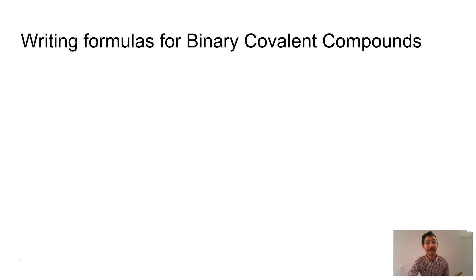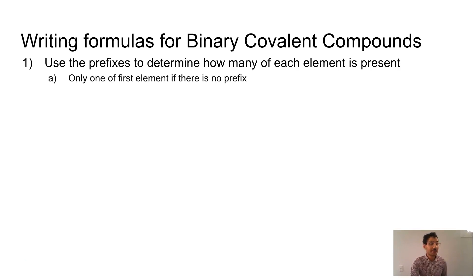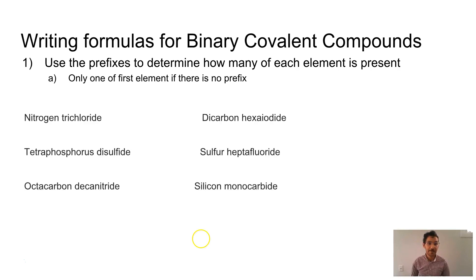Well, if we're going to write formulas for binary ionic compounds, we're going to use those prefixes to determine how much, or how many of each element is present. And remember, if there's no prefix on that first element, we're only going to put one of them in. So why don't you pause the video and try naming these dudes? Sick. You pause the video. Well, let's go through them together.